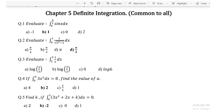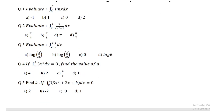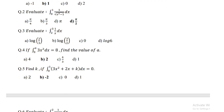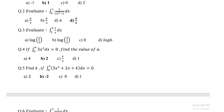Second question for definite integration: evaluate integration of 0 to 1 of 1 upon under root of (x squared minus 1) dx, and the answer is pi by 2. Question number 3: evaluate integration of 2 to 3 of 1 by x dx, and the answer is log(3/2).